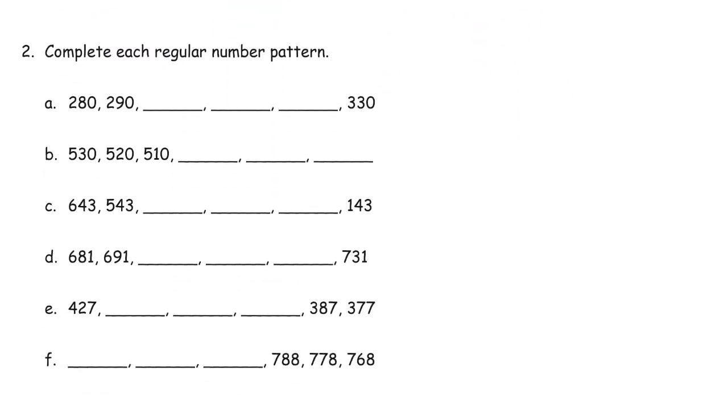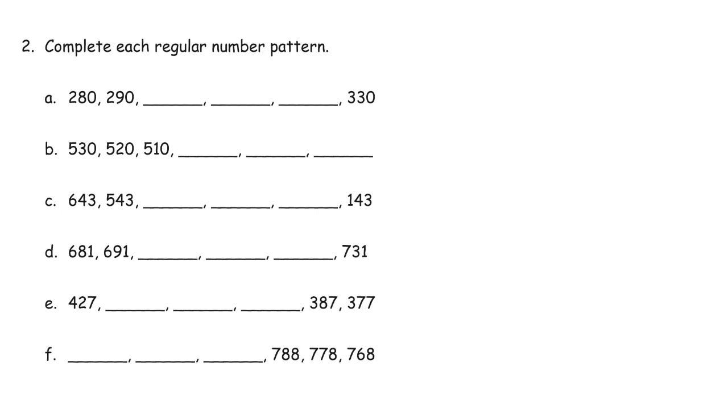And now we're looking at number patterns. First thing when you look at these, you want to see are they increasing? Are the numbers getting larger? Or are they decreasing? The numbers getting smaller. And then by how much are they getting bigger or smaller, by 10 or by 100? So here we have 280, 290. We can see they're getting larger. And they're not getting larger by 100s, it's just by 10s. So we have to go up by 10s. So that's 300, 310, 320.